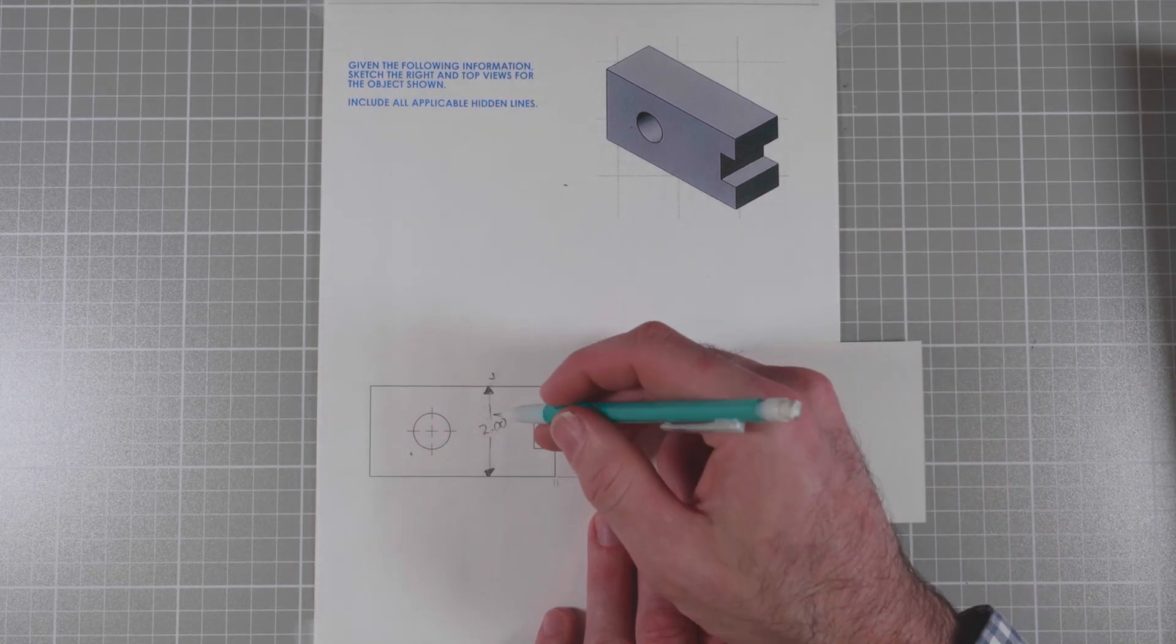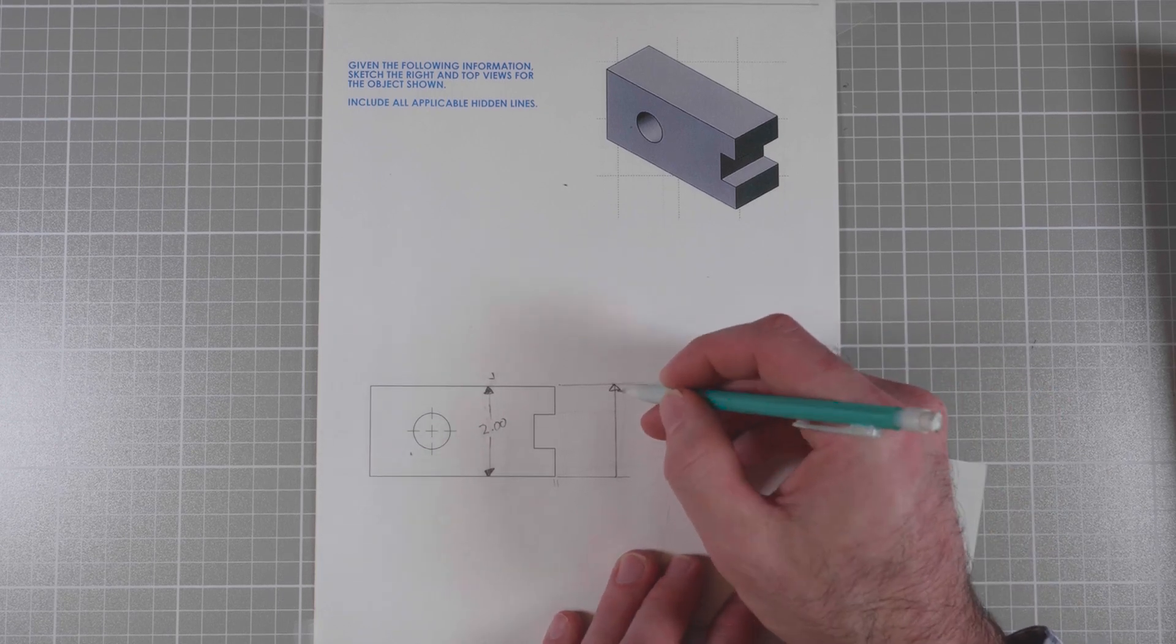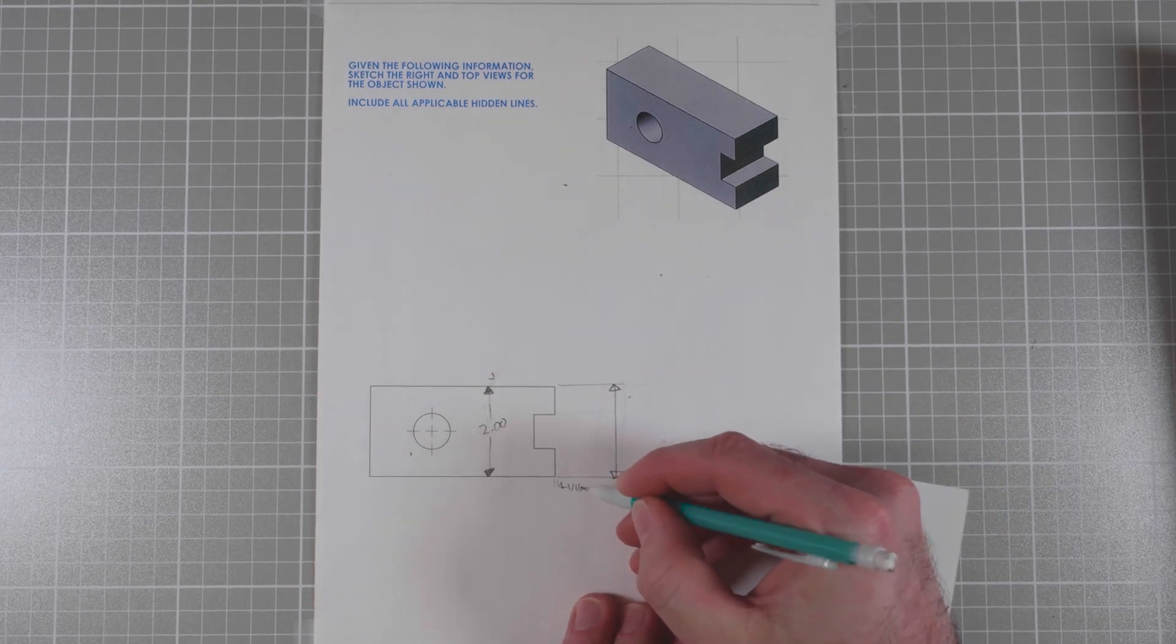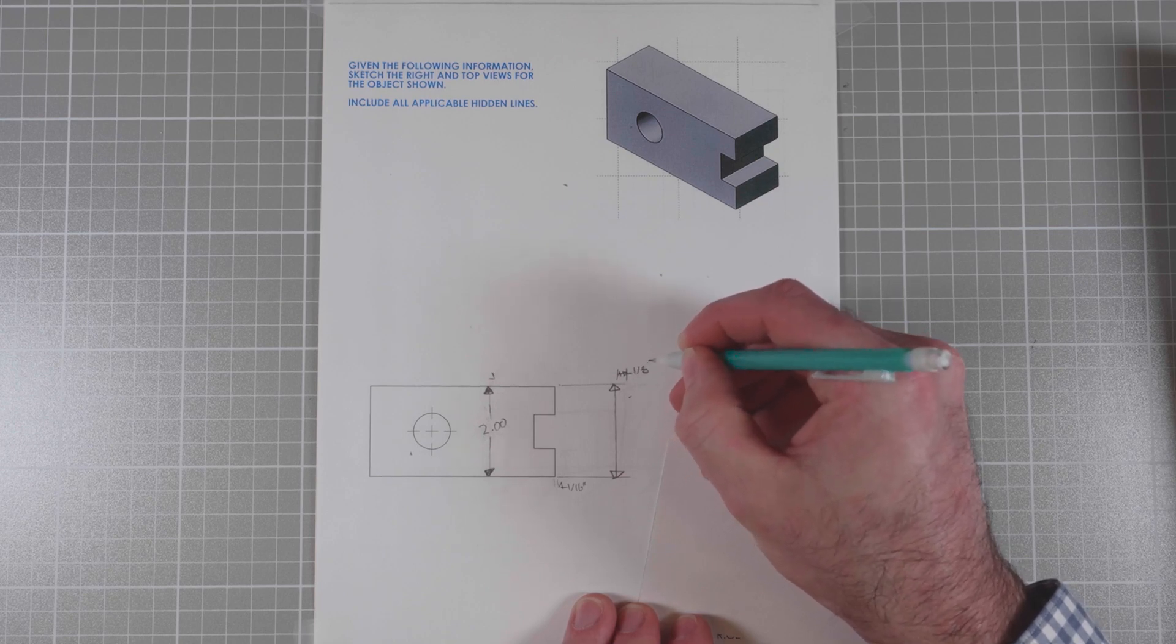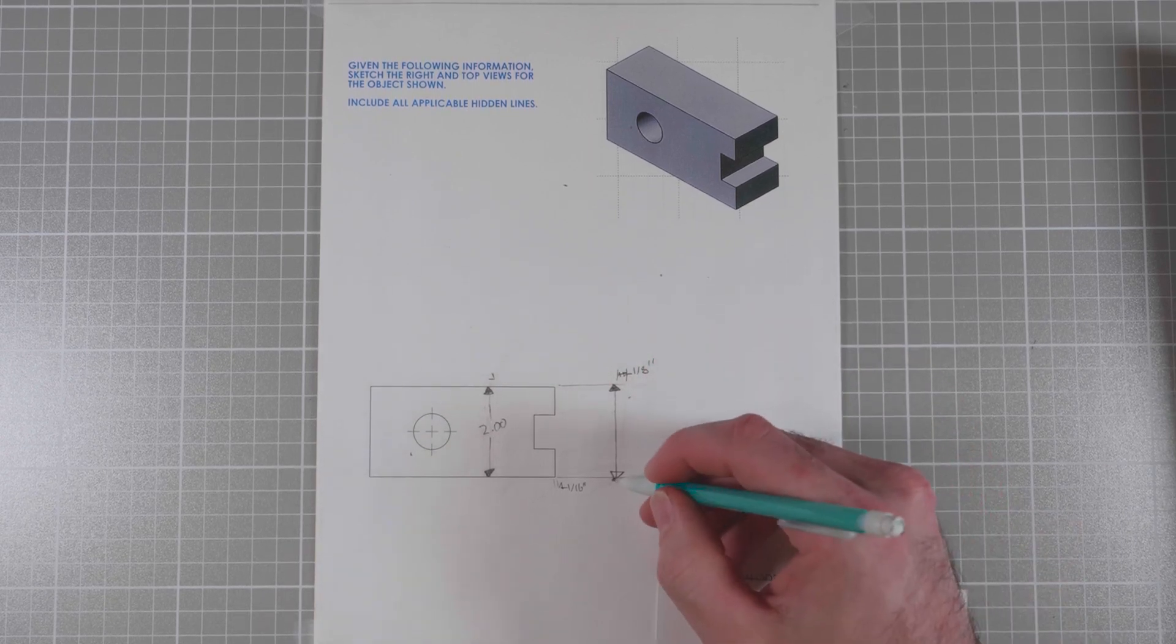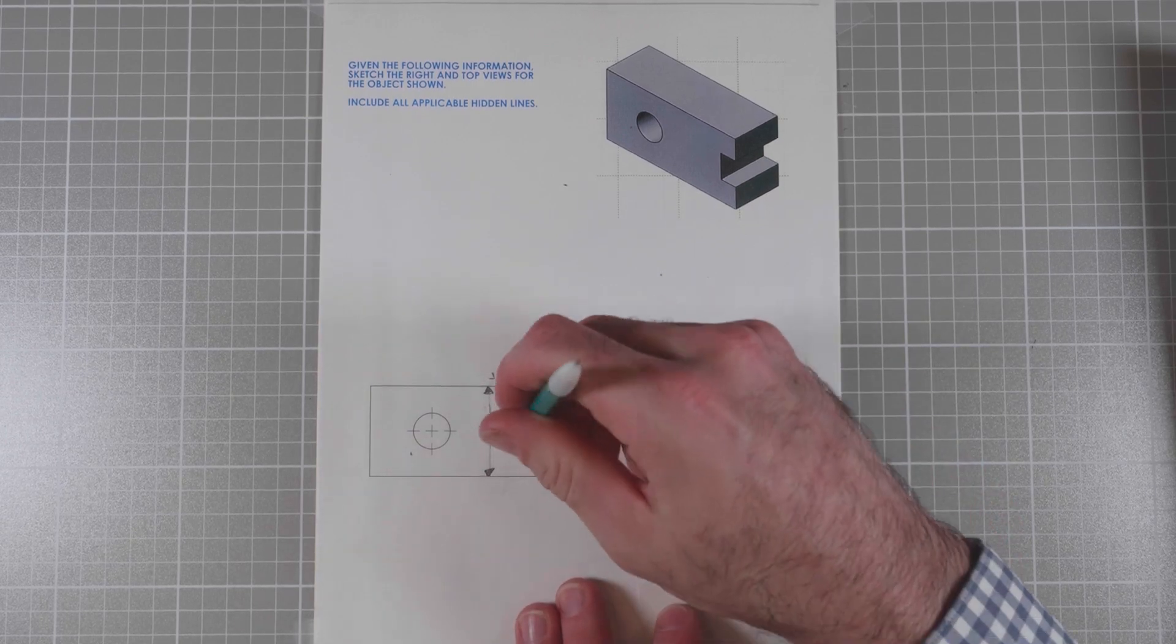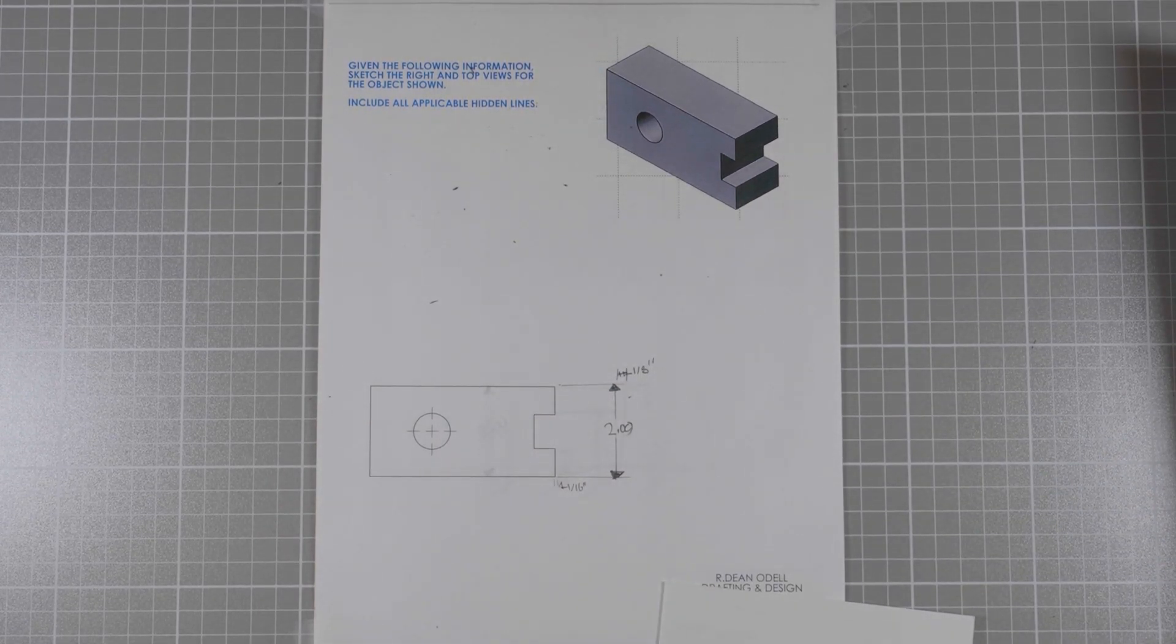Now I'm just going to move this dimension line over here. I'll draw my arrows, the dimension line, and put some dimensions here. The extension line should extend about an eighth inch beyond the dimension line. So I'm going to fill in these arrows. And now we can get rid of this. That moves dimension lines out of the part.